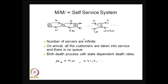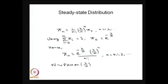All five models discussed today have the birth-death process as the underlying stochastic process. These are the simplest Markovian queuing models. Using birth-death theory, you can obtain the steady-state distribution. For MM-infinity, the steady-state probabilities follow the form of a Poisson probability mass function, so the number of customers in the system is Poisson distributed with parameter lambda over mu.